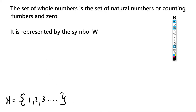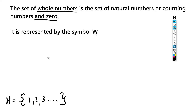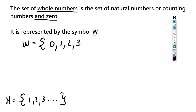The next set is the set of whole numbers. It is the set of natural numbers — or counting numbers — and zero. It's just like the natural numbers except it includes zero. The symbol used to represent whole numbers is W. So W = {0, 1, 2, 3, ...}, going all the way to infinity.